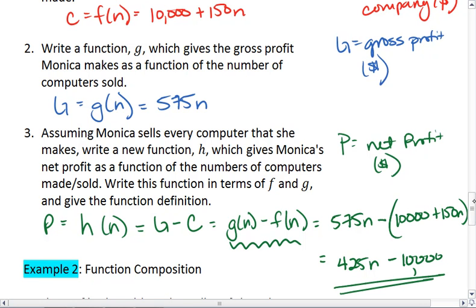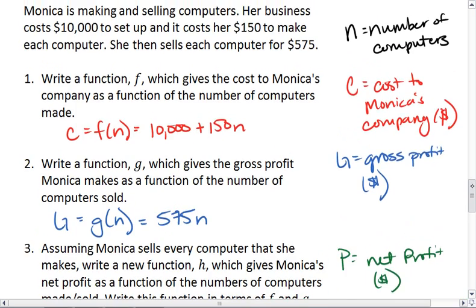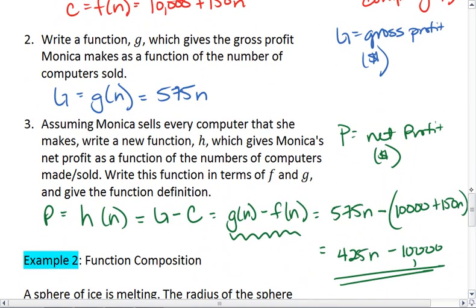This was an example of function combination. Because both functions take an input of n and give me something out, and then I want to subtract those outputs.